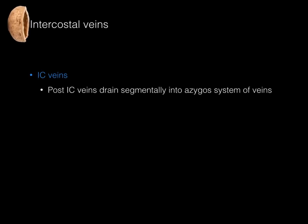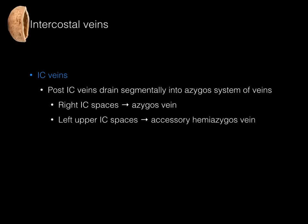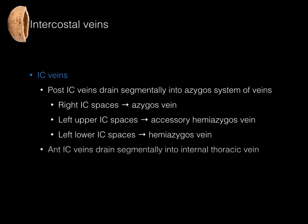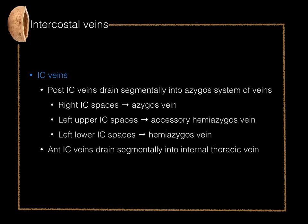Intercostal veins in a nutshell: intercostal veins are paired. We have posterior intercostal veins that drain segmentally into the azygous system of veins — the right intercostal spaces drain into the azygous vein, the left upper intercostal spaces drain into the accessory hemiazygous vein, and the left lower intercostal spaces drain into the hemiazygous vein. We also have anterior intercostal veins that drain segmentally directly into the internal thoracic vein.